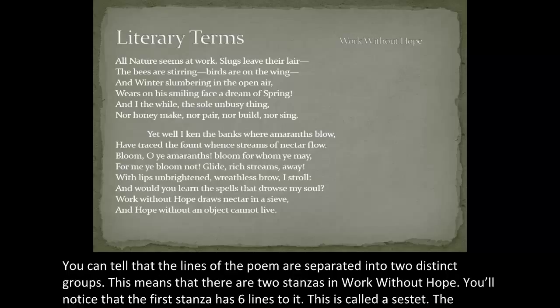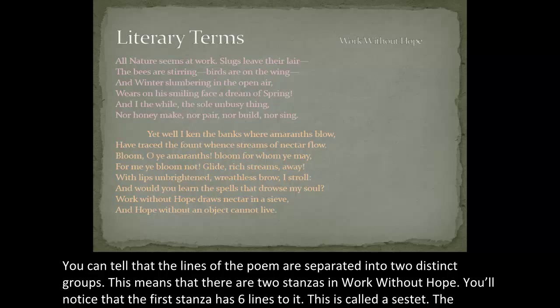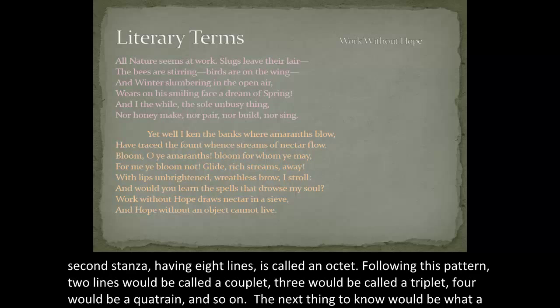You can tell that the lines of the poem are separated into two distinct groups. This means that there are two stanzas in 'Work Without Hope.' You'll notice that the first stanza has six lines to it — this is called a sestet. The second stanza, having eight lines, is called an octet. Following this pattern, two lines would be called a couplet, three would be called a triplet, four would be a quatrain, and so on.